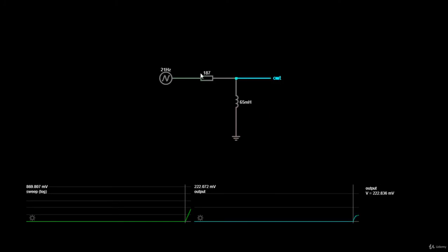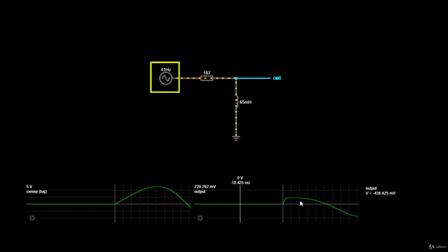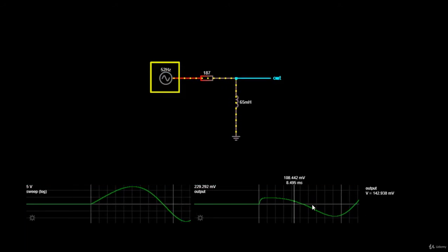This function generator here will change its frequency starting from 21 Hz, all the way up to 1 kHz. The simulation has started, and as you can see, low-frequency input signal below 454 Hz is attenuated.